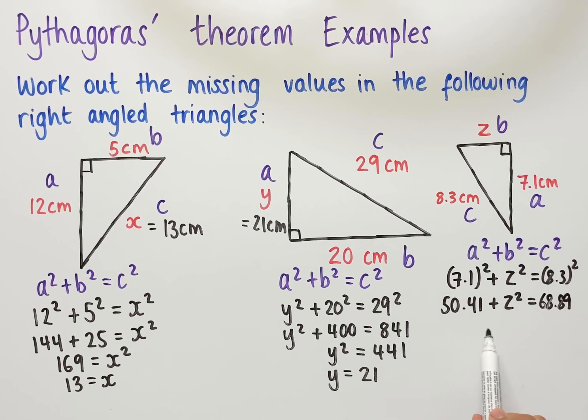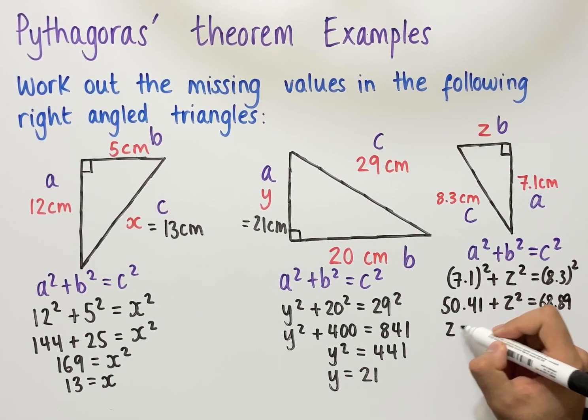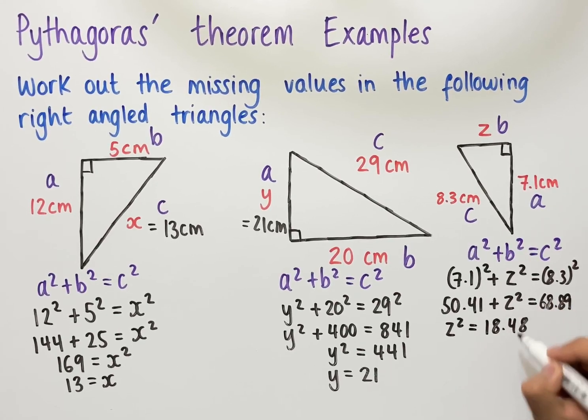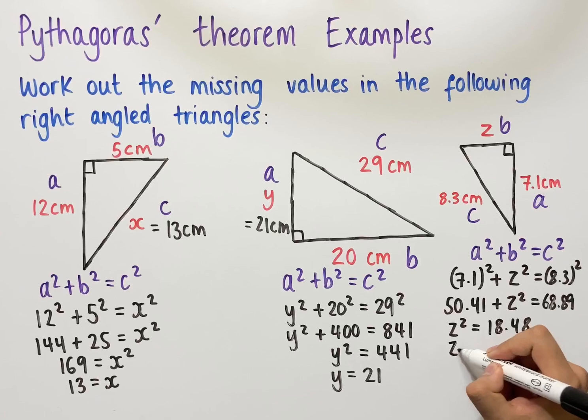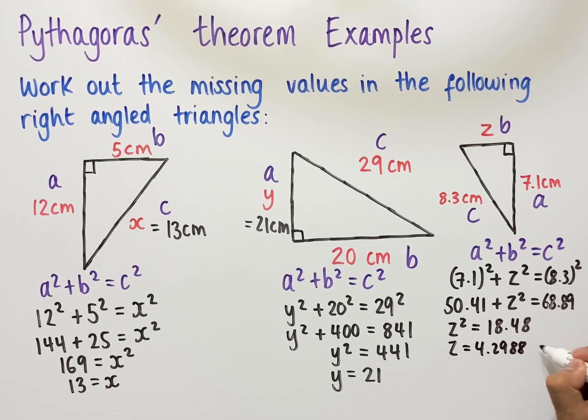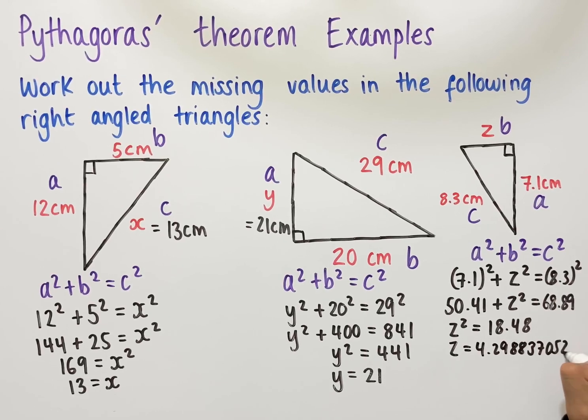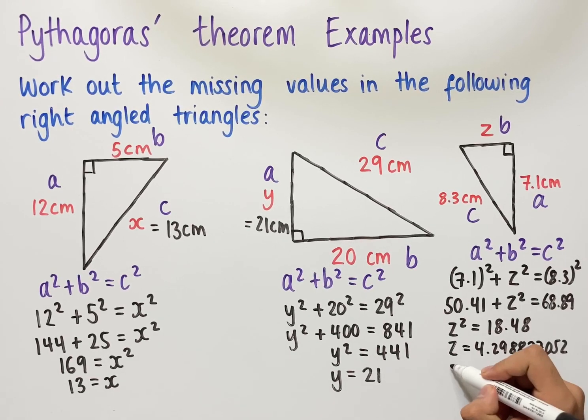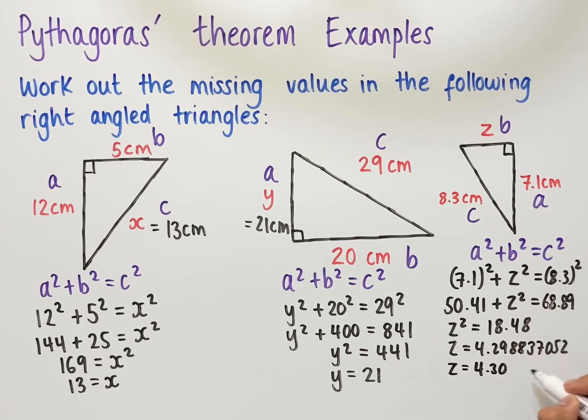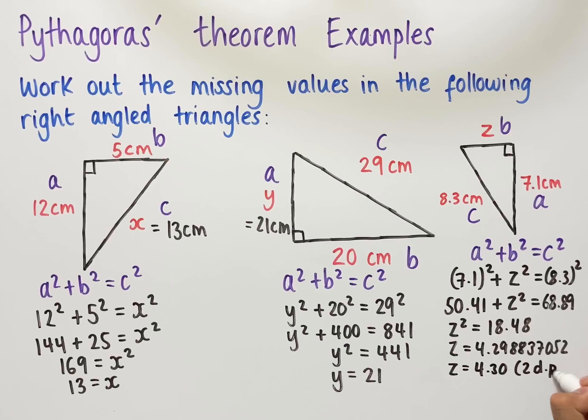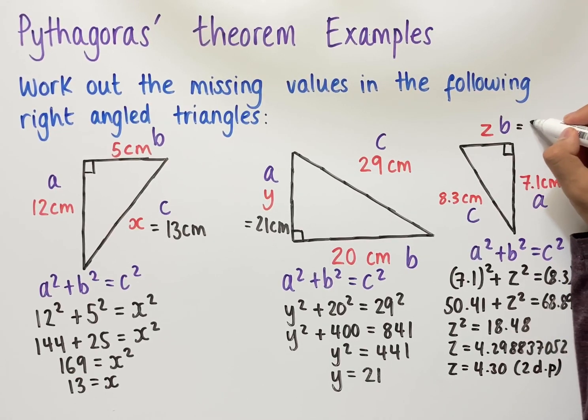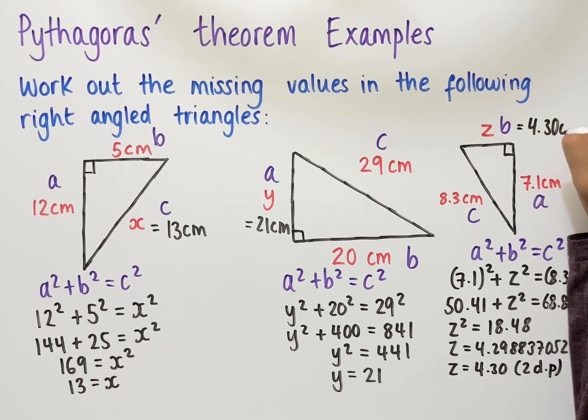Taking away 50.41 from both sides, we have that z squared equals 18.48. And then square rooting both sides, we get that z equals 4.298837052. And if we round this value to two decimal places, we get that z equals 4.30. And so therefore, our answer as a measurement for z is 4.30 centimetres.